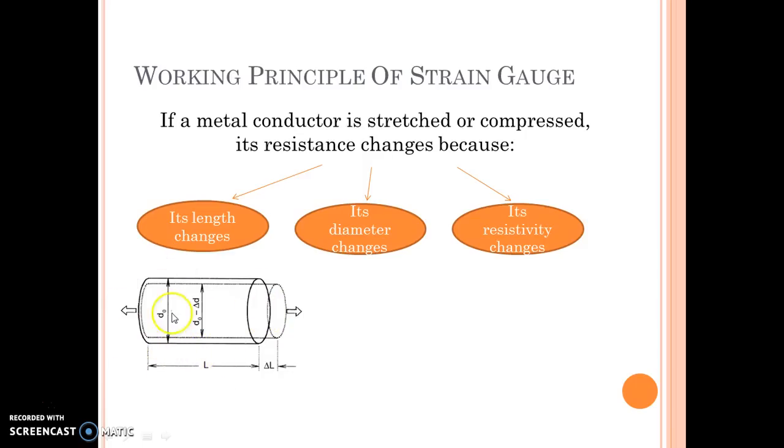So let's imagine this metal conductor. This original diameter was D0 and length was capital L. Now I am trying to stretch this from both the sides so that the diameter now has changed by a very small amount delta D, and length has increased by a very small amount delta L. But what actually happens so that the resistance of this changes? This can be very easily stated by this formula which is very well known to us: R is equal to rho L by A, whereas rho is called as the resistivity.